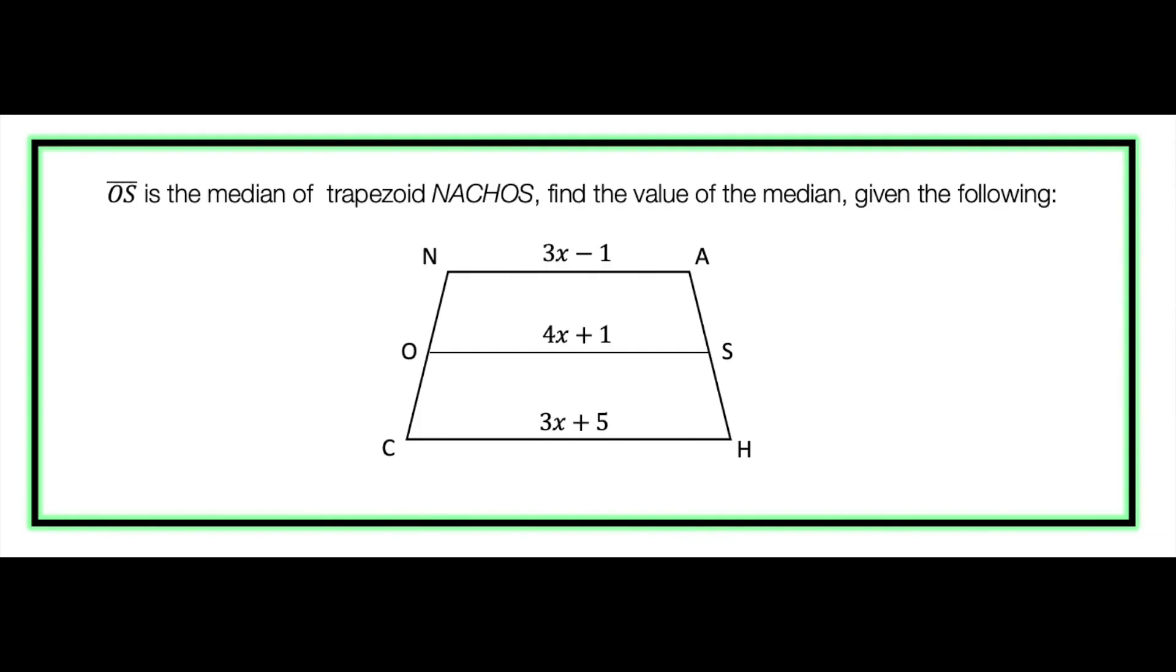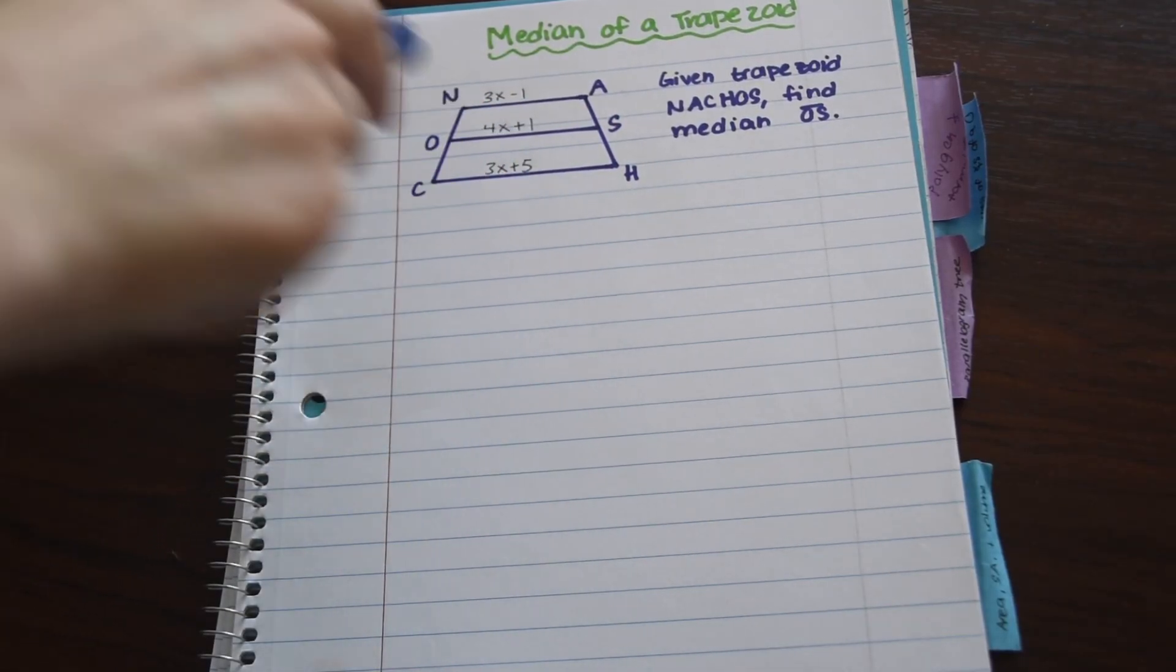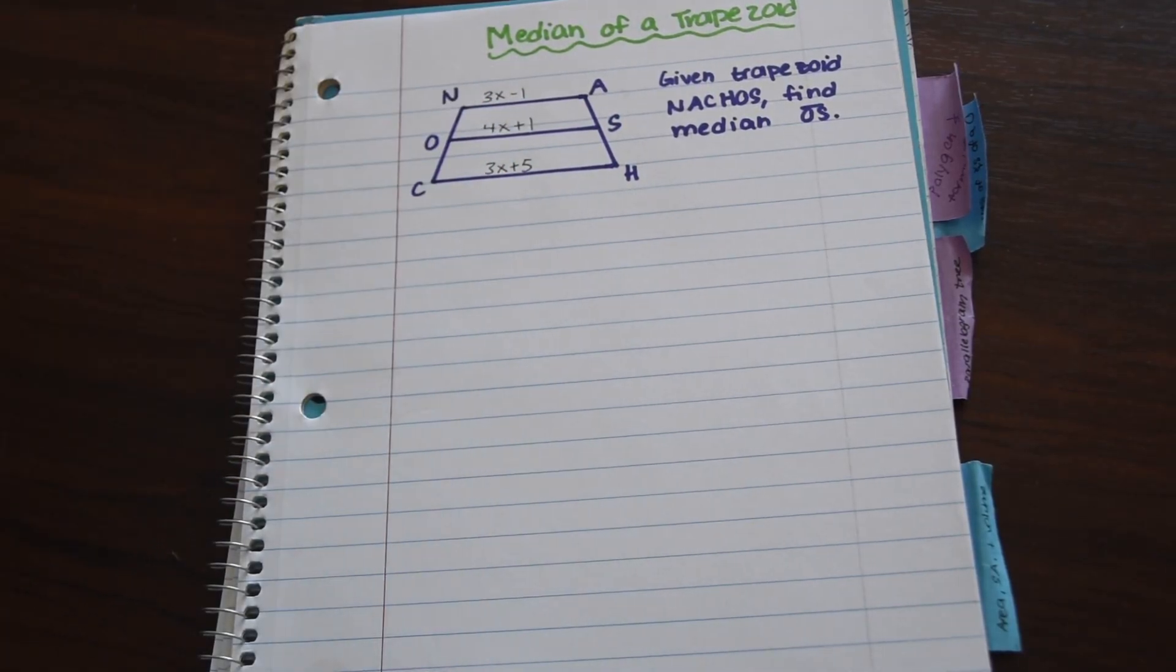So we have this question here, given trapezoid NACHOS, find median OS. So if you look at our trapezoid, our median is OS right here and has a value of 4X plus 1. We don't know exactly the value, which is what we're going to have to find.